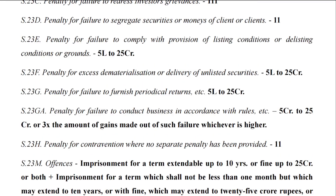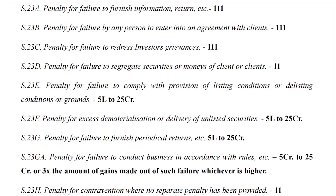Section 23G is the penalty for failure to furnish periodic returns, etc., which also carries the same penalty of 5 lakh rupees to a maximum of 25 crore rupees.